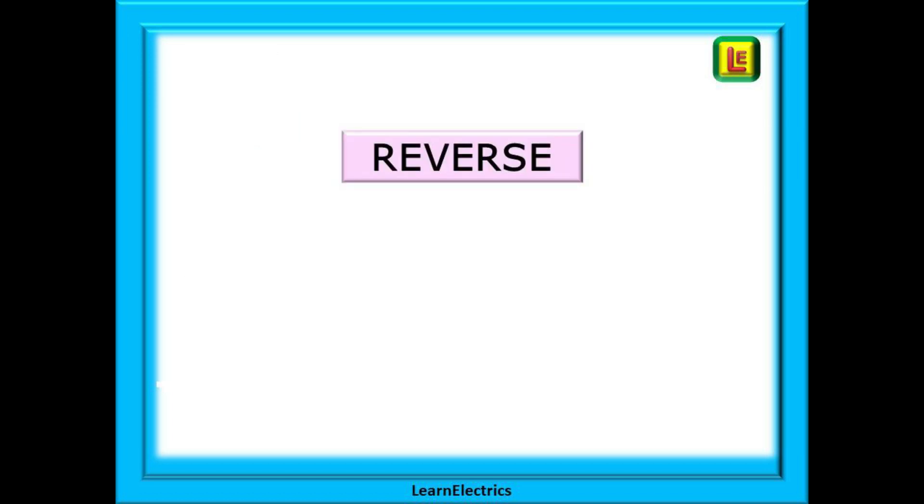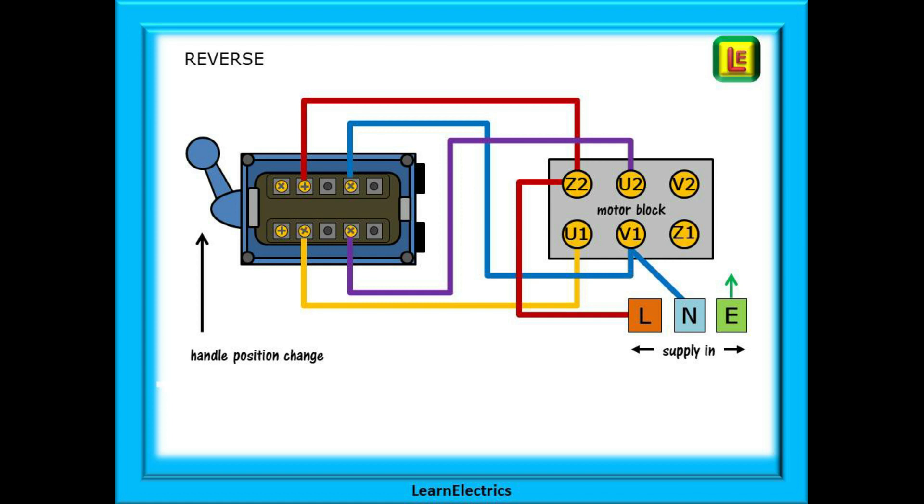Let us put the motor into reverse now. Again the only visual change is the selector arm but what has happened inside the switch? The dotted lines show the internal crossover connections. Phase is now connected to U2 and neutral to U1. The motor will turn in the reverse direction. And that is all there is to it.